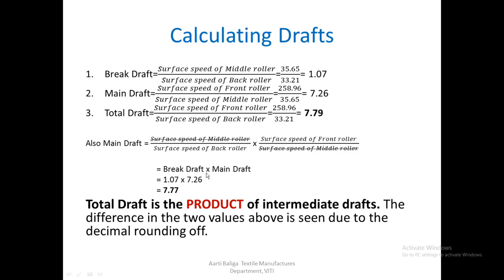When I replace the formula I get brake draft multiplied by main draft equals total draft. Multiplying both values gives 7.77, which is approximately equal to 7.79 obtained earlier. So total draft is a product of the intermediate drafts — remember it is not addition but multiplication. The small difference is due to decimal rounding off and can be ignored.